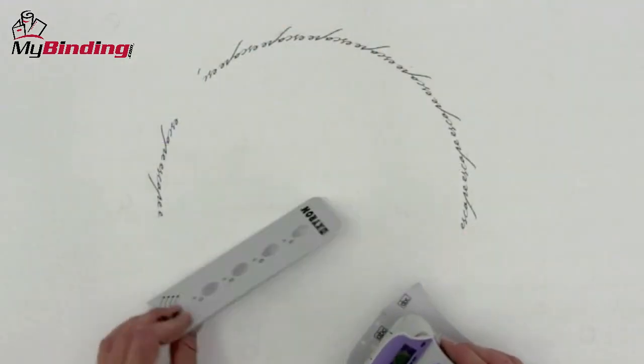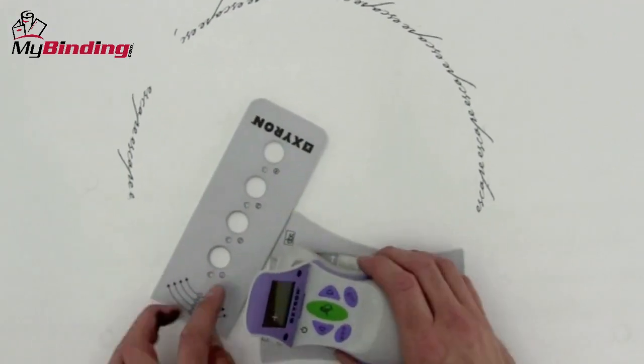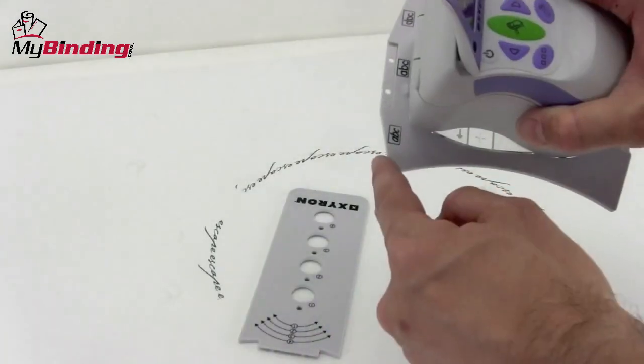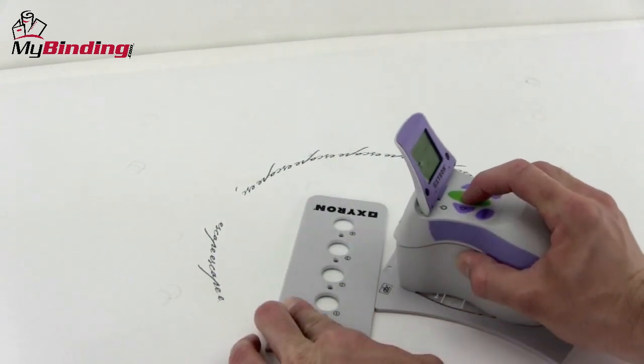By unsnapping and changing the configuration of these two tools, using this angled edge, you can make perfectly consistent italicized print.